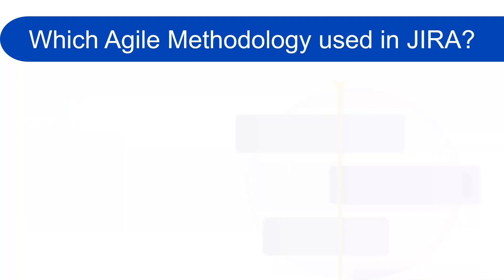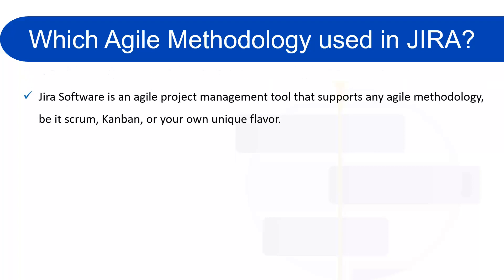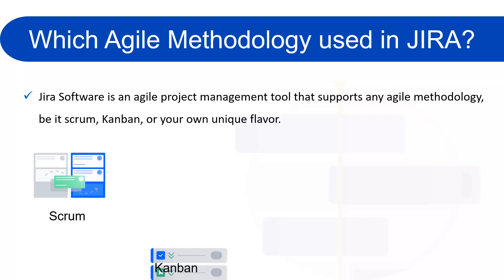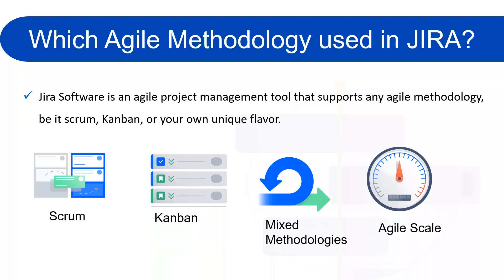Which agile methodology is used in Jira? This is a common question for people starting to learn Jira. Jira Software is an agile project management tool that supports any agile methodology — be it Scrum, Kanban, or your own unique flavor. In this course, we will focus on Scrum and a little bit on Kanban, since most organizations use both.